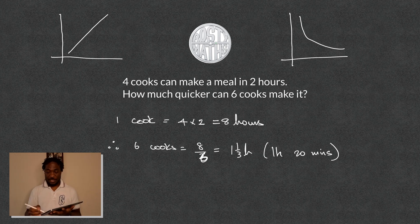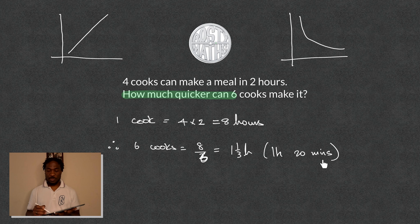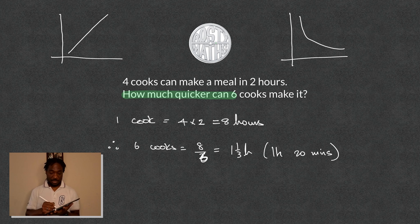I haven't answered the question yet, so let's answer it now. The question is: how much quicker would it take six cooks to do the job? Well, four cooks took two hours and six cooks took one hour and 20 minutes — what's the difference? 40 minutes. So six cooks will be 40 minutes quicker.